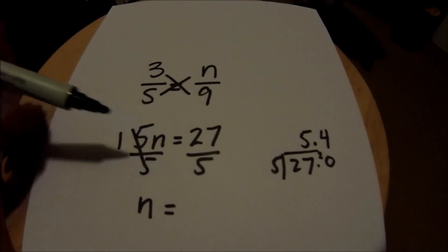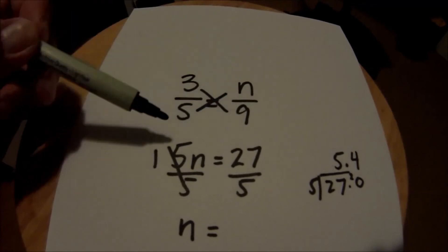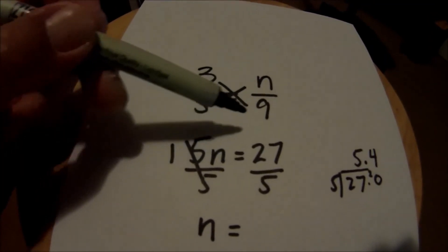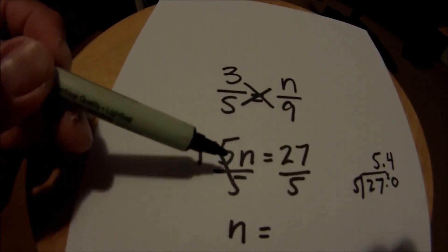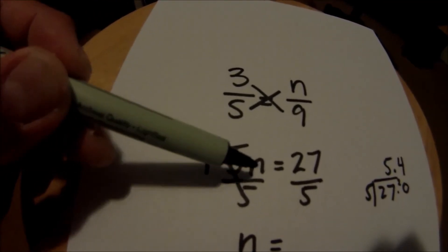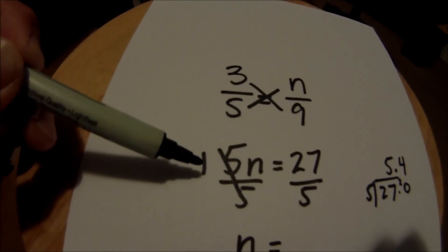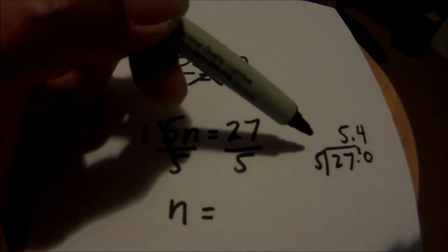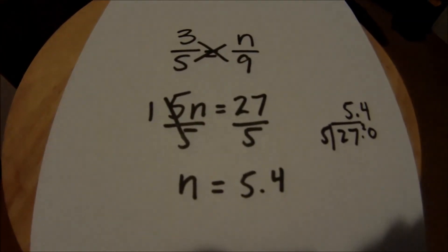So this algebraic way has us multiplying across or diagonally. 5 times n is 5n, 9 times 3 is 27. I'm going to divide both sides by the number next to the variable. So 5 into 5 is 1 which leaves n by itself. And then 5 into 27 is 5.4.